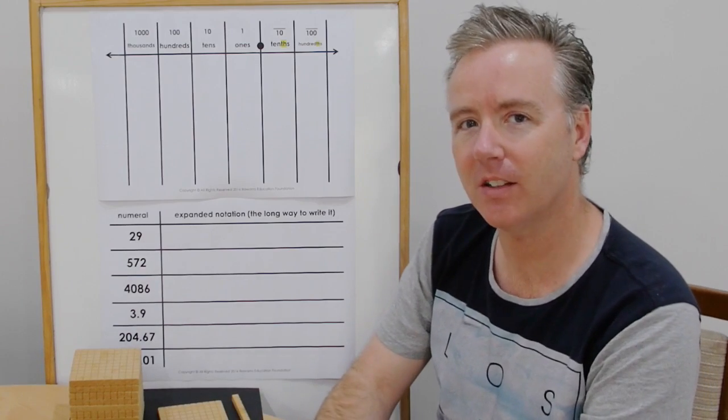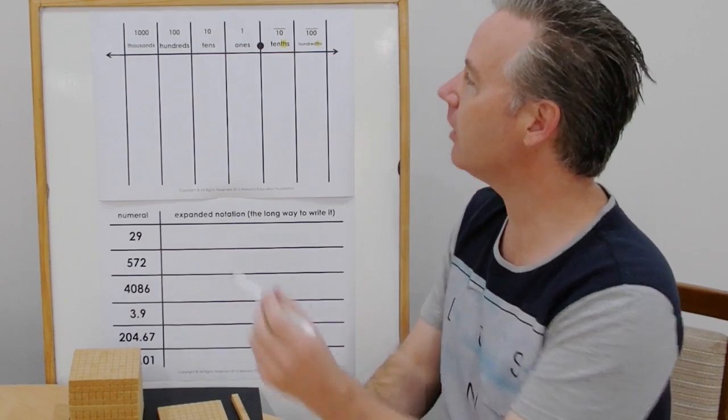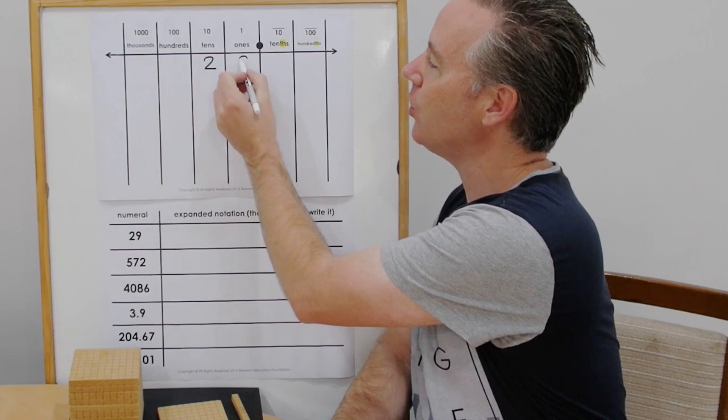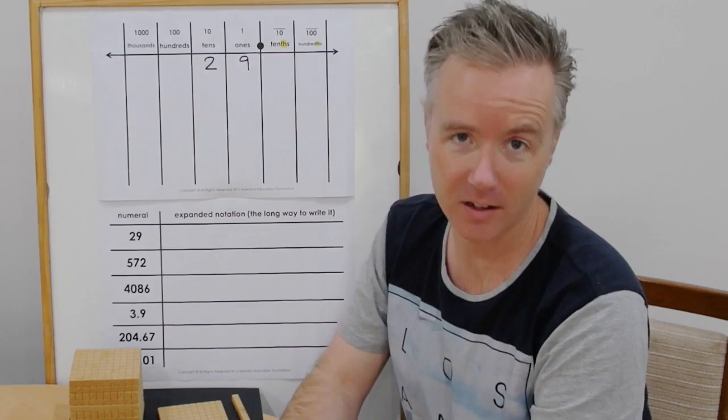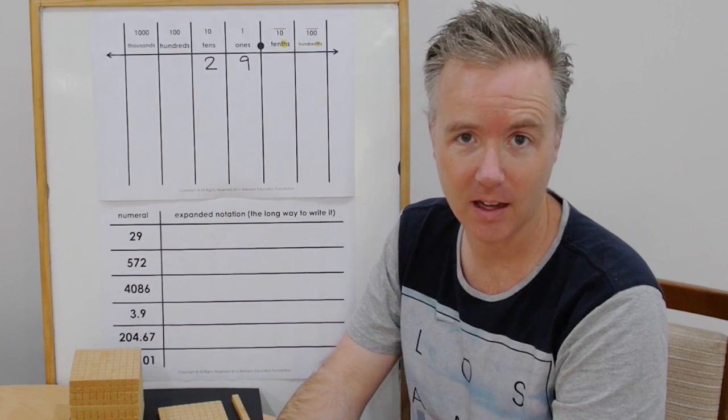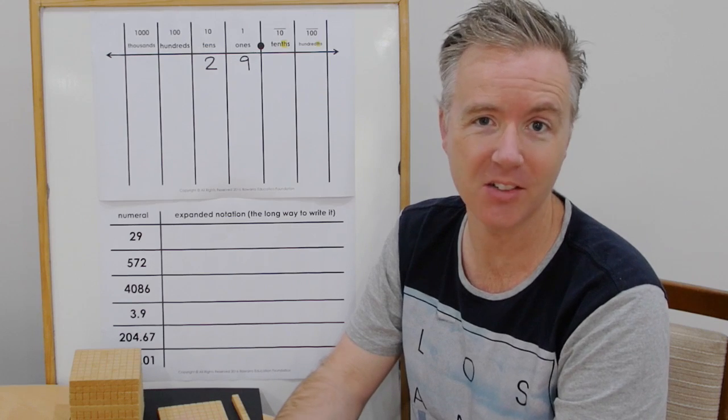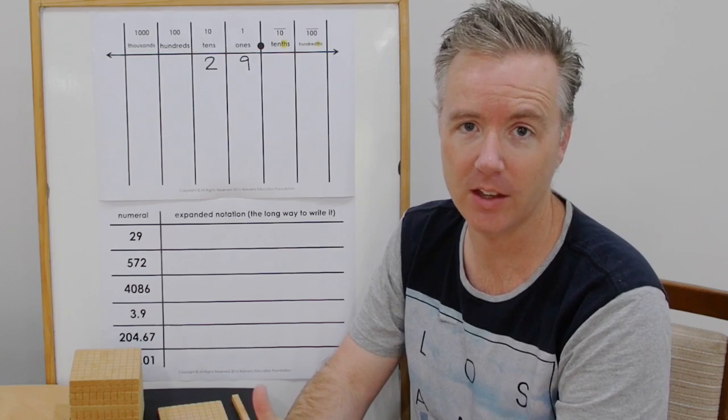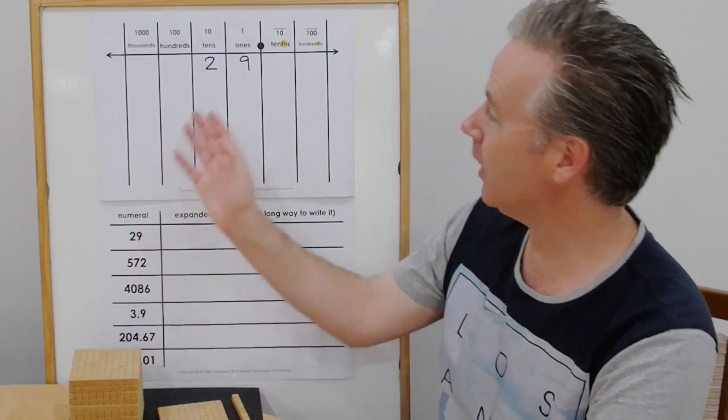We'll start nice and easy. The number is twenty-nine. Now I hear a lot of people say twenty-nine is a two and a nine. Of course it's not a two and a nine. It's a twenty and a nine. So parents out there, when you describe numbers to your children, it's really great if you could actually use the correct language in maths.